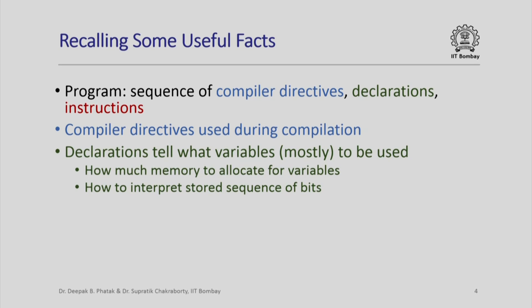Declarations tell the compiler what variables are to be used. Declarations are mostly about variables in the programs we are going to see. A declaration tells how much memory to allocate for storing the value of a variable — for example, if a variable is declared as an integer then 4 bytes of memory are to be allocated for it. A declaration also tells how to interpret the bits stored in those memory locations allocated for a variable.